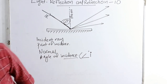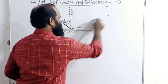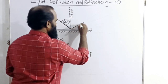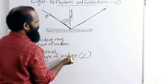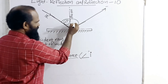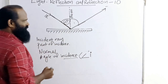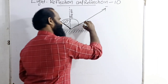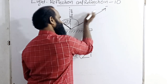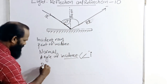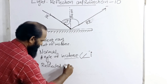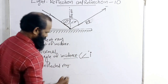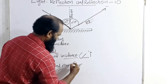That means, the incident ray and the normal ray have an angle formed between them. And when it reflects, it reflects in such a way making an angle on the other side — that angle is exactly equal to this angle. This is the line which reflects from the surface — the reflected ray. An angle is formed between the reflected ray and the normal ray. We denote it with the help of angle R — R stands for reflected ray.